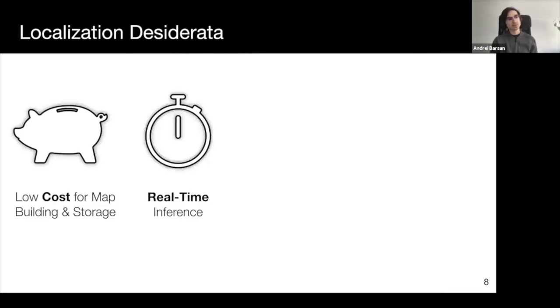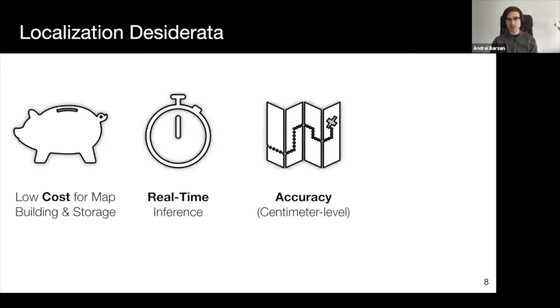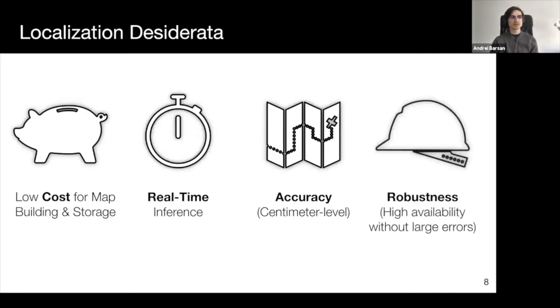The main characteristics we would like from a localization system for self-driving cars running at scale are low costs, the ability to localize in real time, high accuracy centimeter-level localization quality, as well as robustness—the capacity to handle and recover from possible failures. However, in order to achieve these goals, there are still several major challenges which have to be overcome.